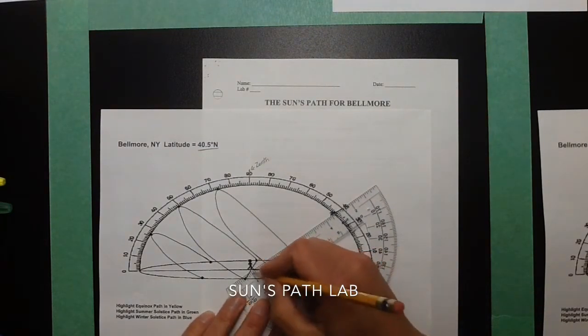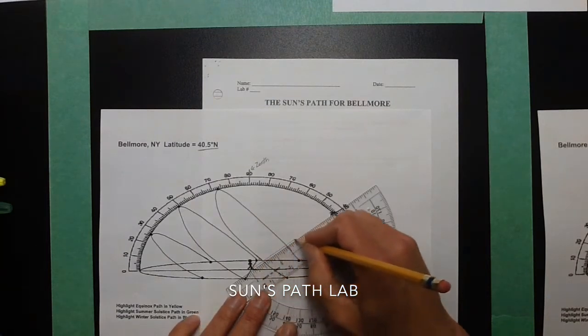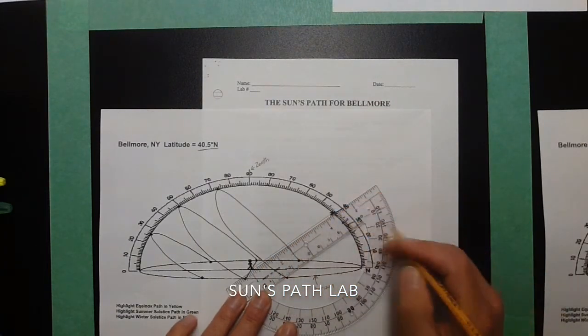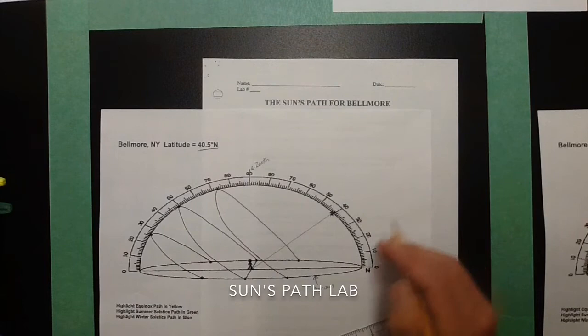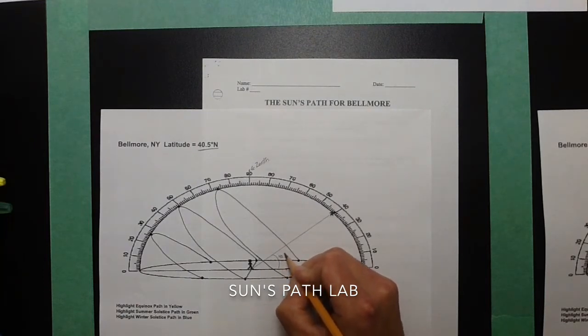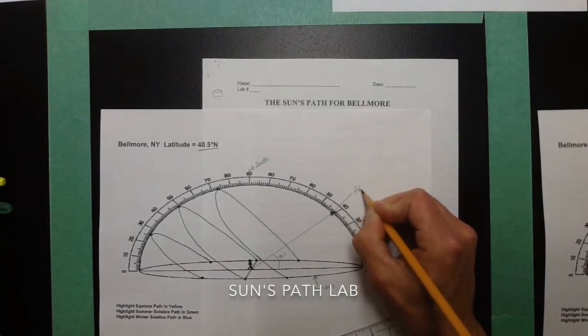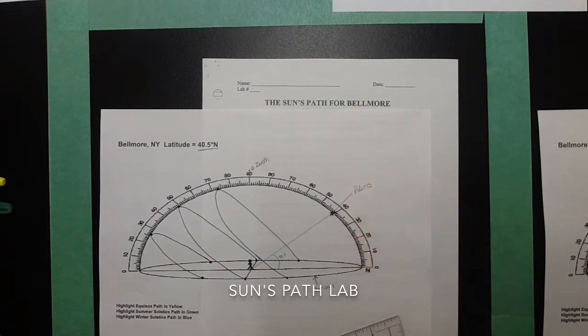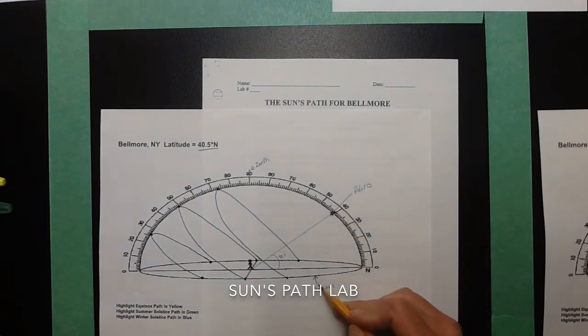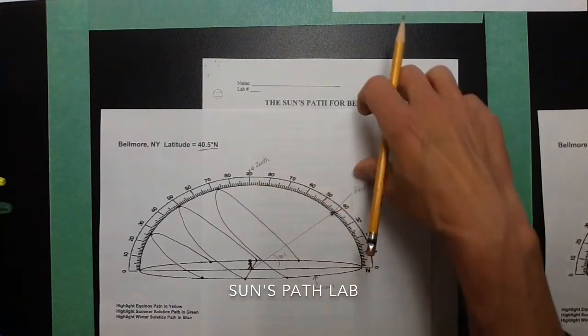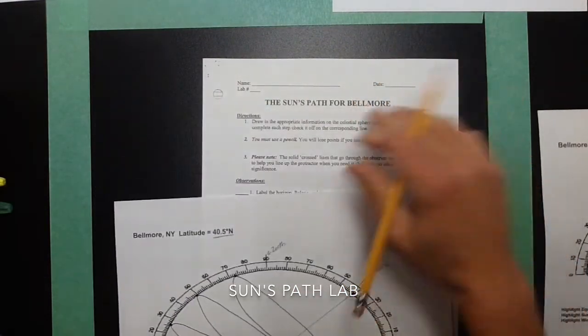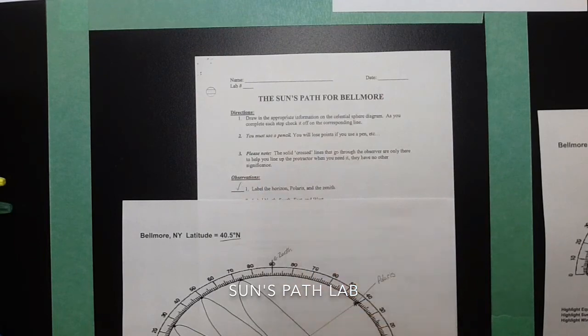So I'm going to draw a little angle here up to show you that that angle, which would be the altitude of Polaris, would be here. And this should be a 40.5 degree angle. And that star up here is Polaris. So I've labeled the horizon, the zenith, and Polaris. So I'm going to check off number one.